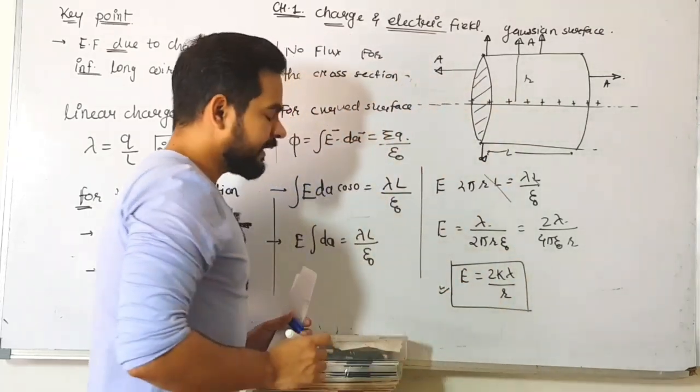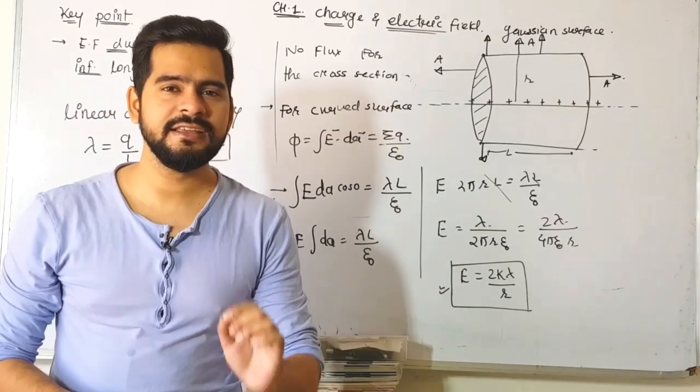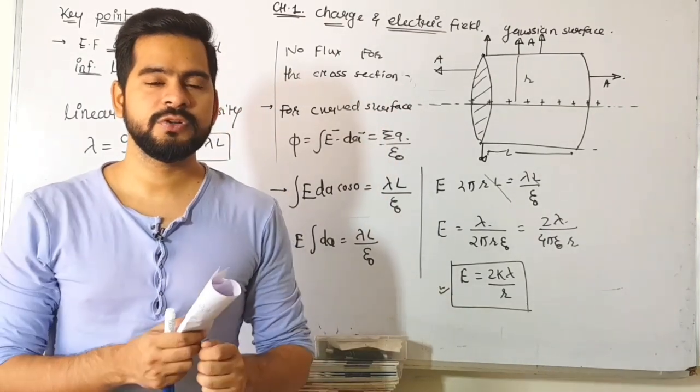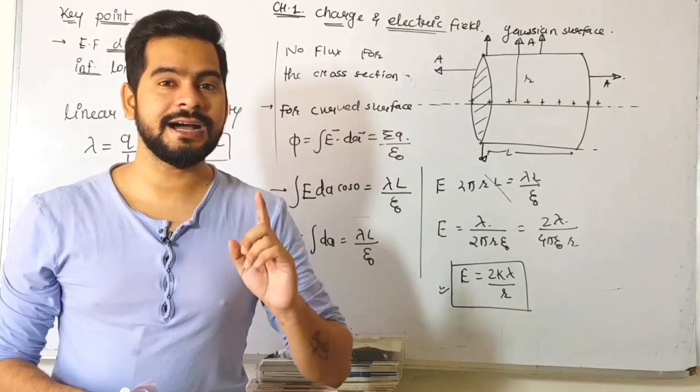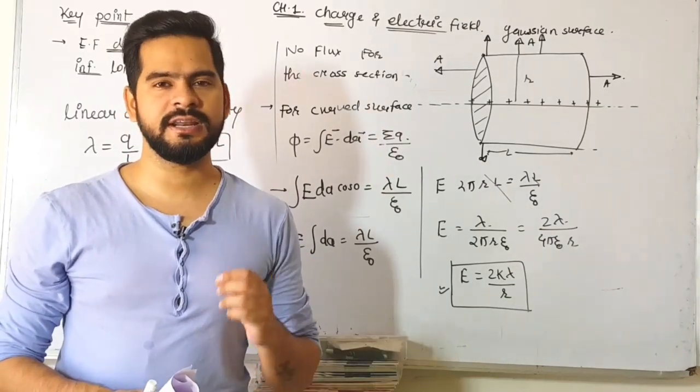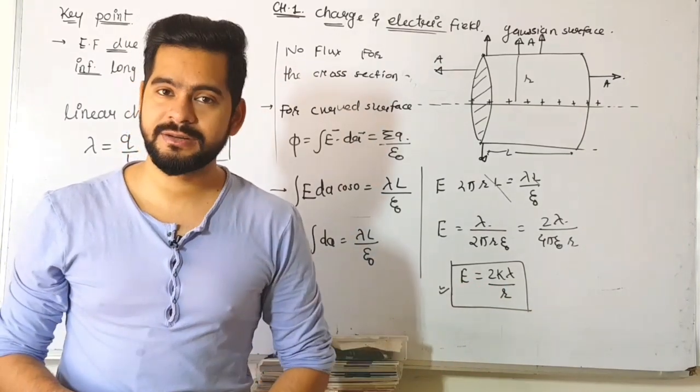We can write 2πε₀ as 1/k where k is Coulomb's constant. So the formula is E = 2kλ/r. This is a very important equation for electric field due to an infinite long charged wire at perpendicular distance r: E = 2kλ/r.